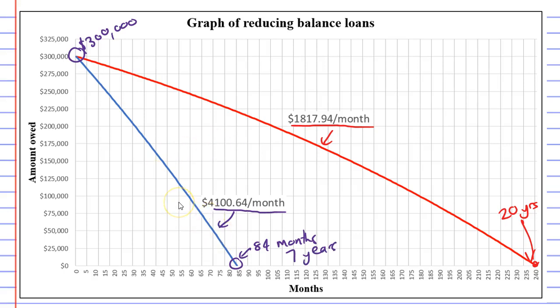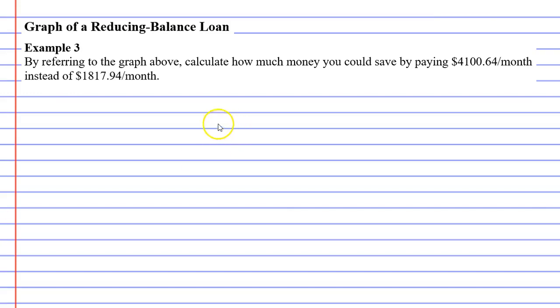So we're going to complete an example that refers to this graph. It's example three, and it says, by referring to the graph above, calculate how much money you could save by paying $4,100.64 per month, as opposed to $1,817.94 per month.